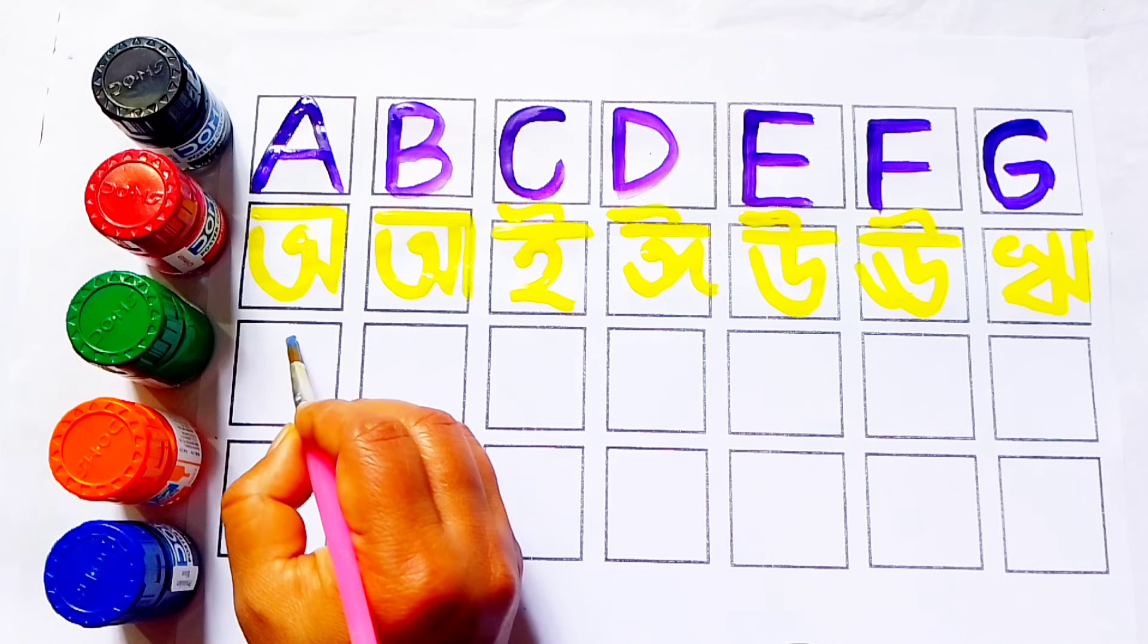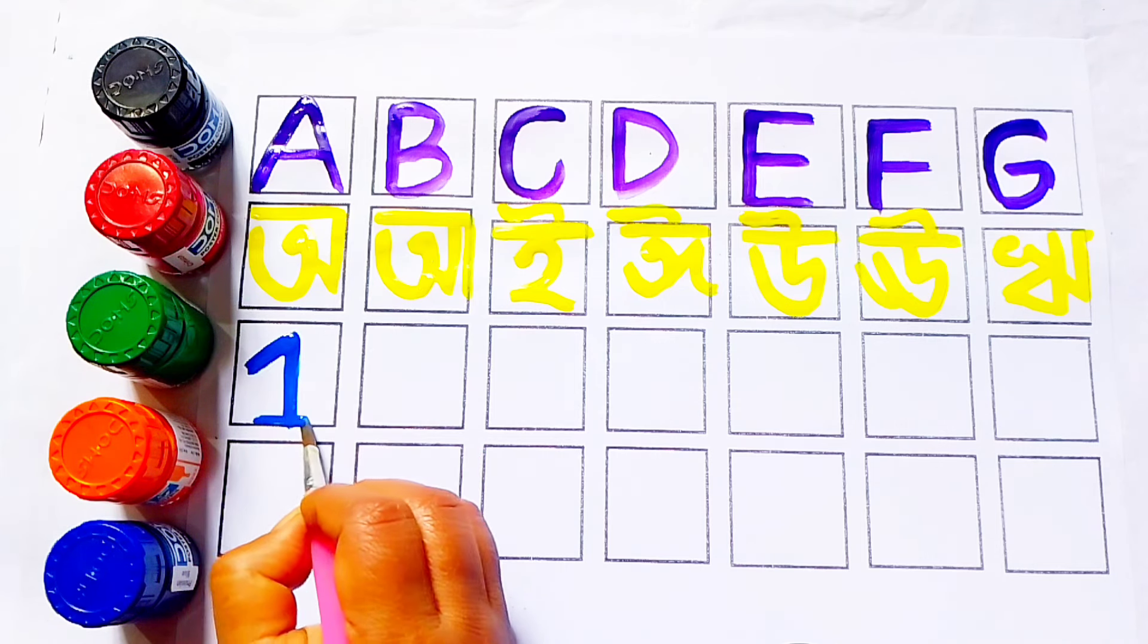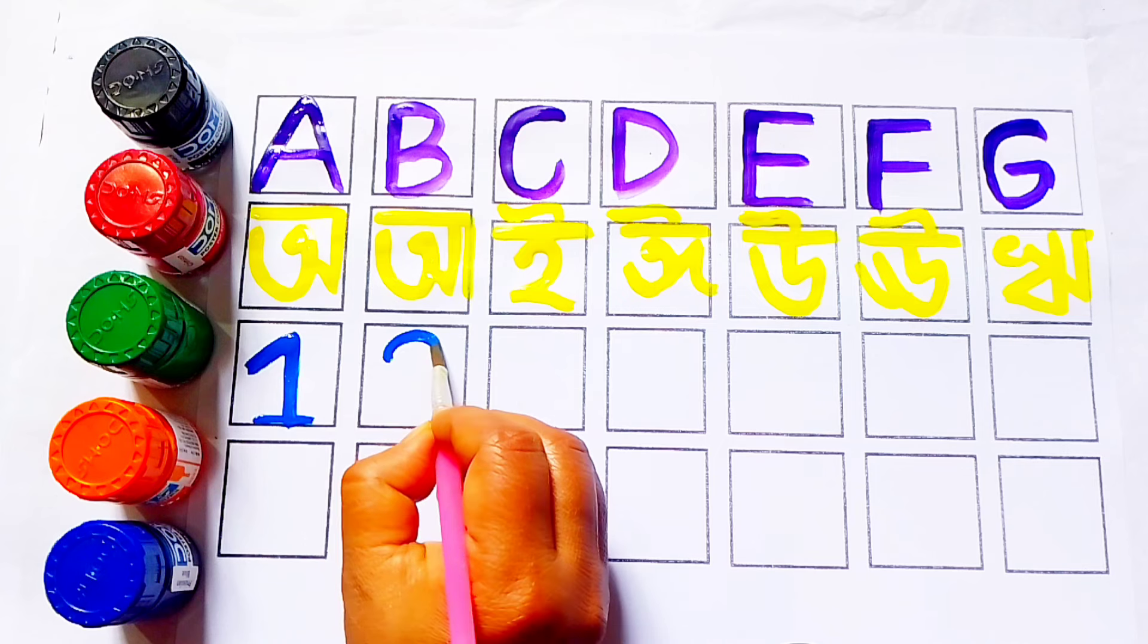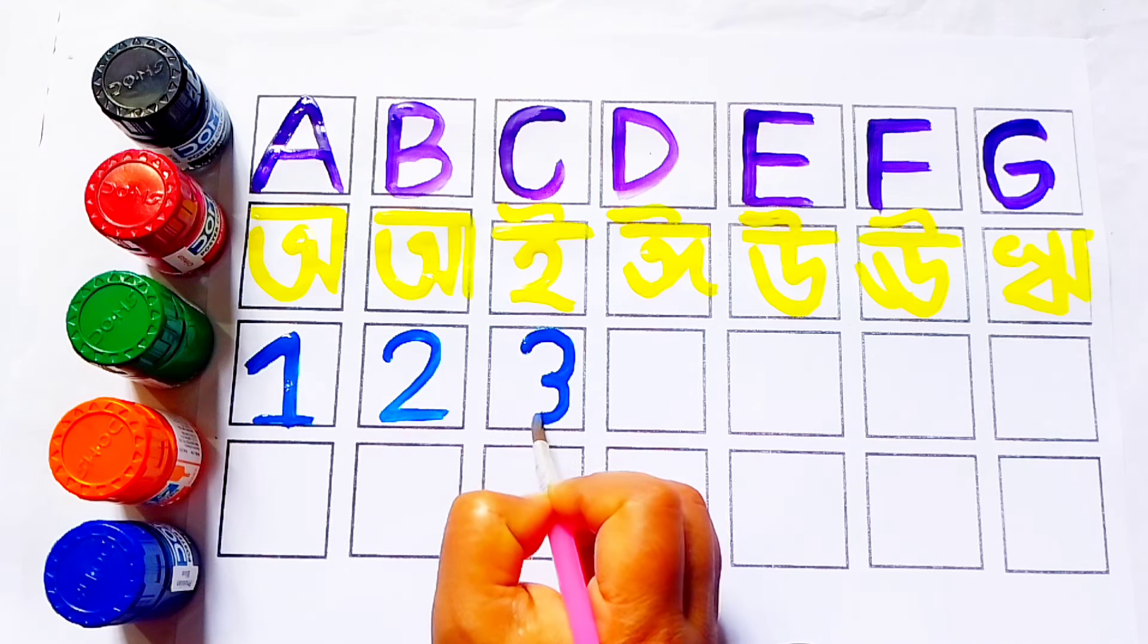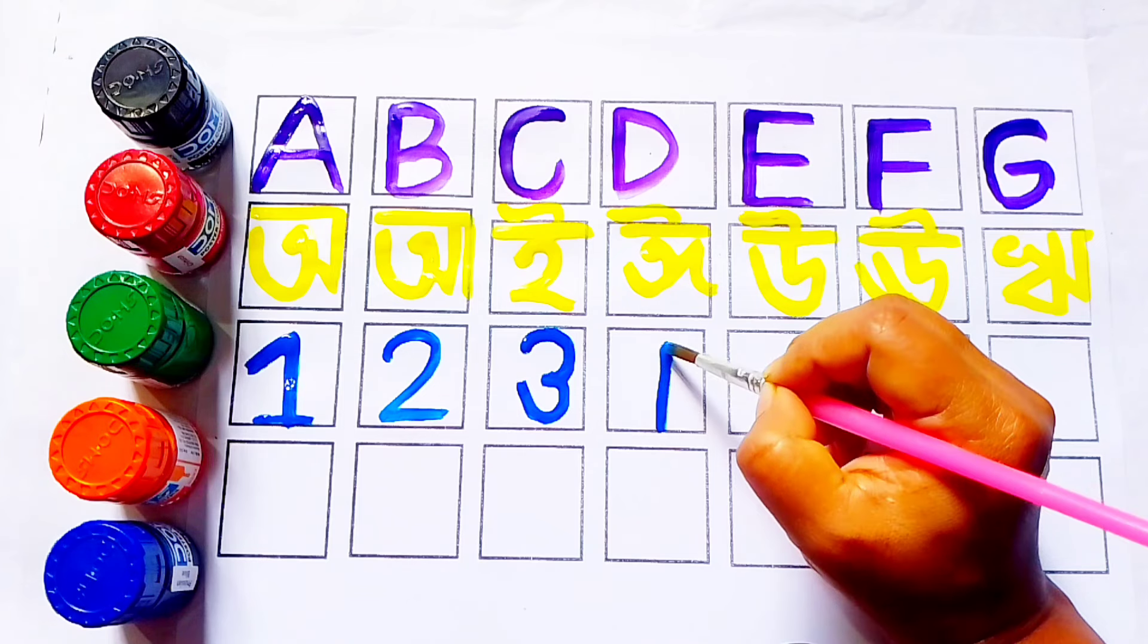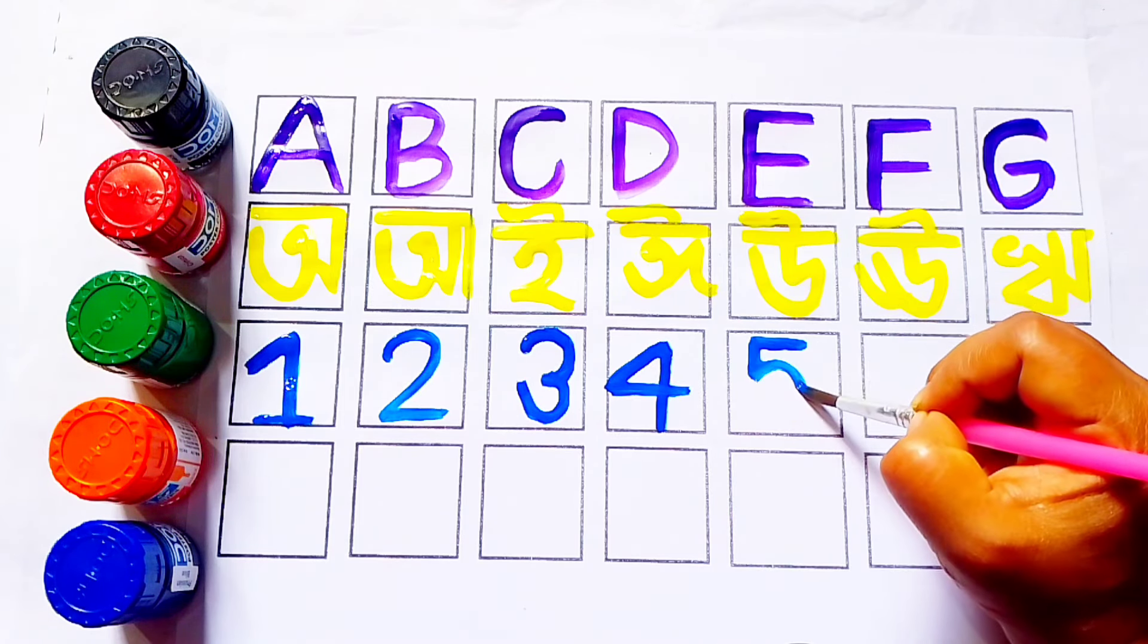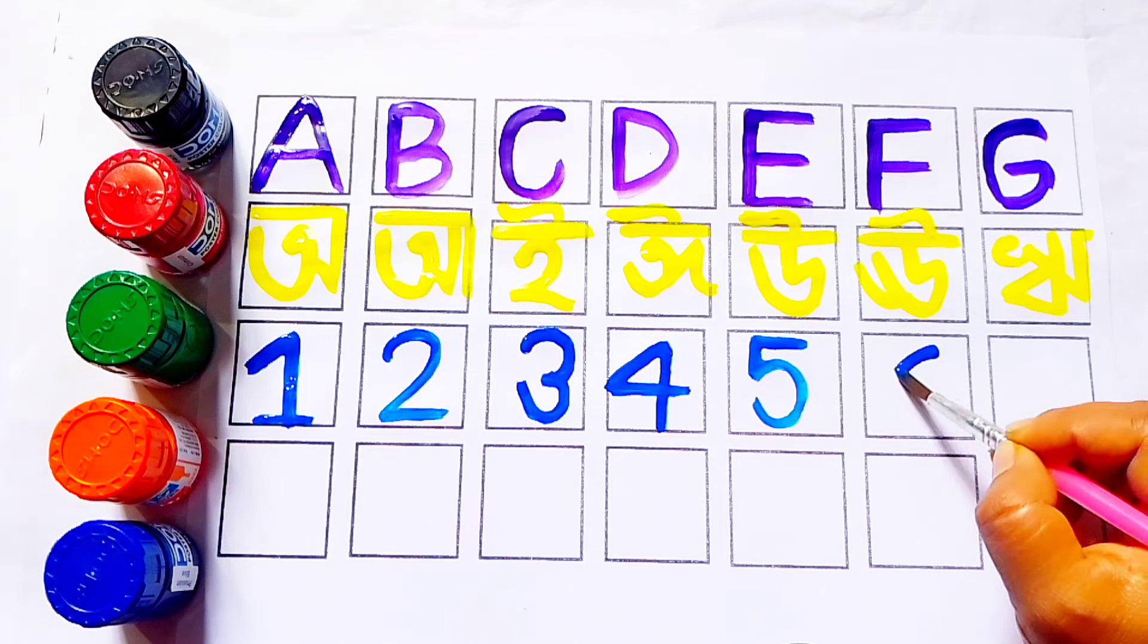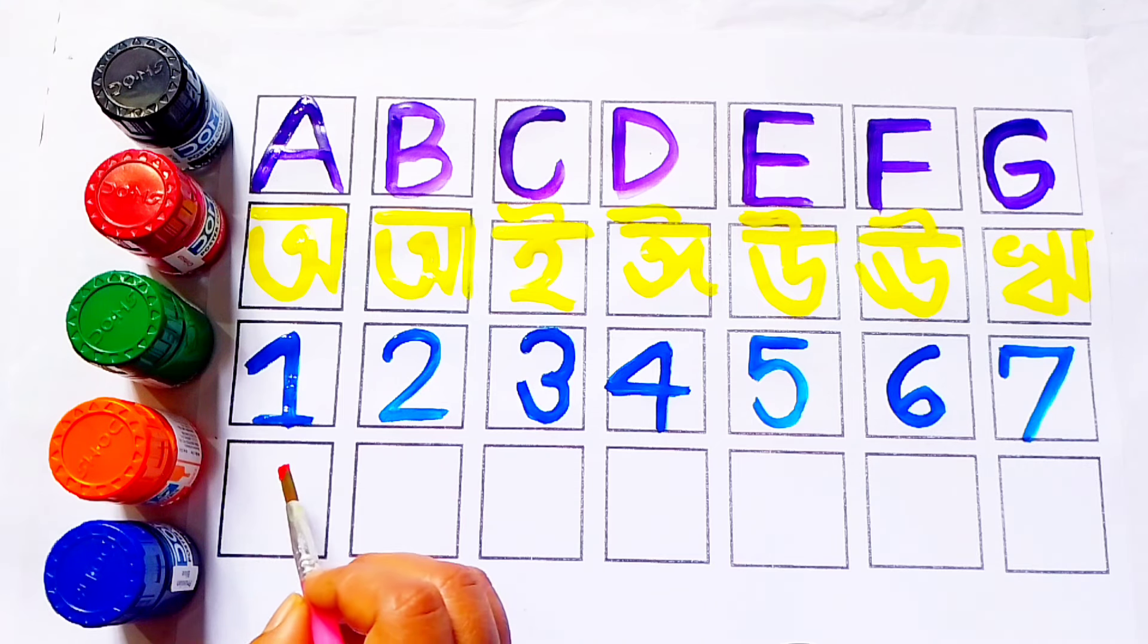Nilrong. Blue color. 1, this is number 1. 2, 3, 4, 5, 6, 7.